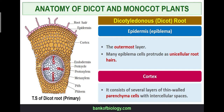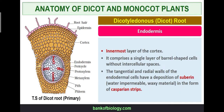In the dicot root: the epidermis is the outermost layer; many epidermal cells protrude as unicellular root hairs. The cortex consists of several layers of thin-walled parenchyma cells with intercellular spaces. The endodermis is the innermost layer of the cortex, consisting of a single layer of barrel-shaped cells without intercellular spaces. The radial or tangential walls of endodermal cells have deposits of suberin — the Casparian strips.